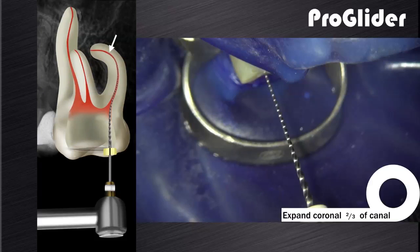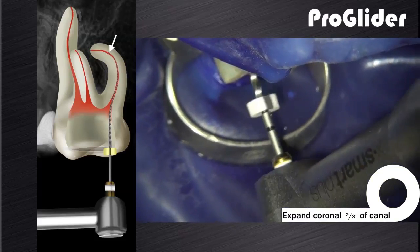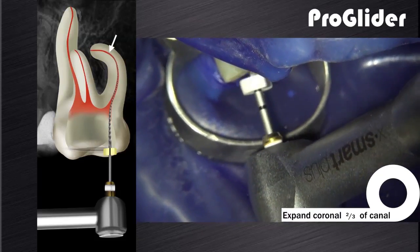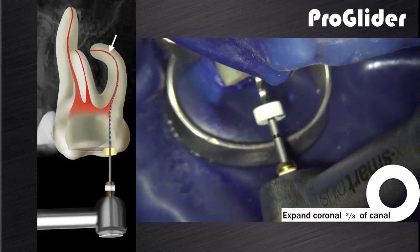In narrow canals where you often battle to get negotiation to patency, I would recommend that you use the ProGlider instrument just in the coronal two-thirds of the canal, or up to the point where the hand file hung up. The ProGlider is then used in a backstroke brushing motion in order to create more coronal space in the canal.